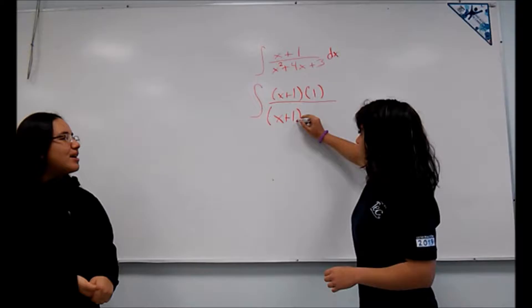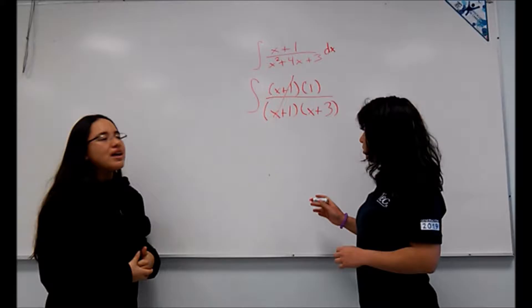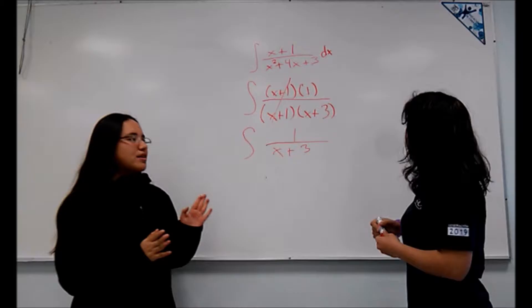For the numerator, it's x plus 1 multiplied by 1, and for the denominator it's x plus 1 multiplied by x plus 3. We must cancel x plus 1 on both sides, and our function simplified is 1 over x plus 3.